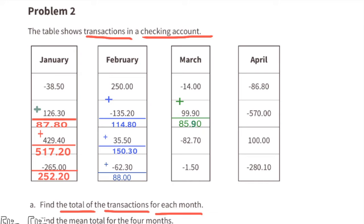And the last transaction in February was a withdrawal of $62.30, leaving them a February account balance of $88. Let's look at March. They start with a withdrawal of $14, followed by a deposit of $99.90, leaving a temporary balance of $85.90. Another withdrawal of $82.70, leaving a temporary balance